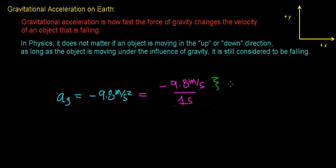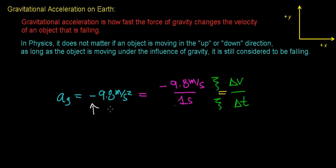The negative 9.8 meters per second represents the change in the object's velocity, and the one second represents the time it takes to change that velocity — which should remind you of the definition of acceleration: the change in velocity per change in time, or how fast the velocity of the object changes. The negative sign in front of this value represents the direction of acceleration, in this case the downward direction.